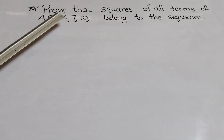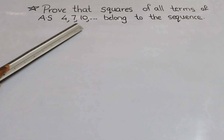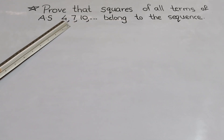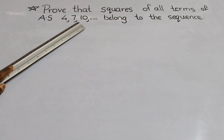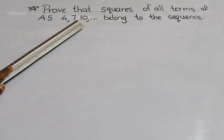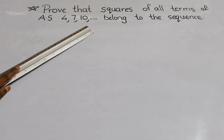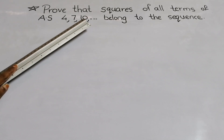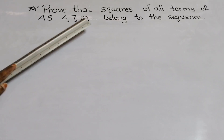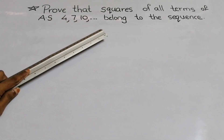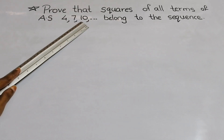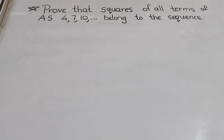That means we have particular terms here: 4, 7, 10, etc. What is the square of 4? It is 16. What is the square of 7? It is 49. The square of 10 is 100. So they are asking you to prove that those numbers 16, 49, 100 also belong to this sequence. I will show you a very easy method to prove this type of question.